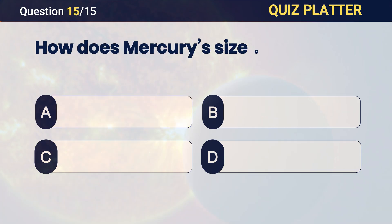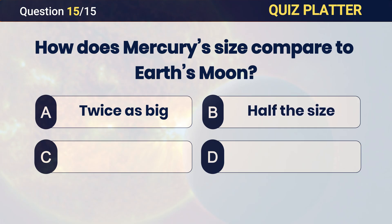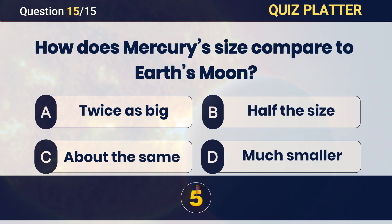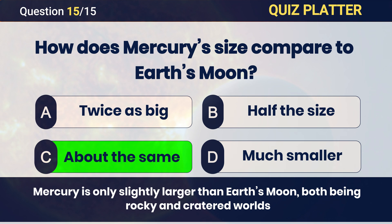How does Mercury's size compare to Earth's Moon? Answer: C — about the same.